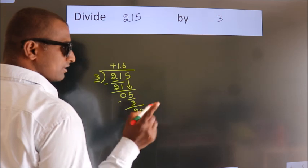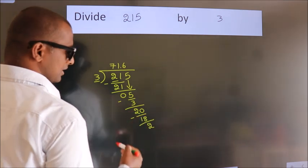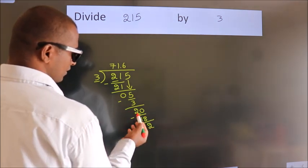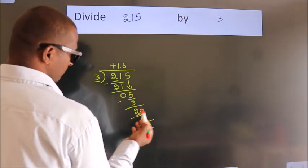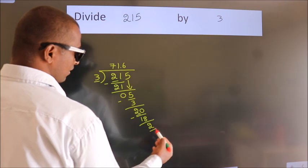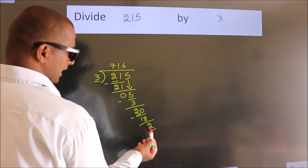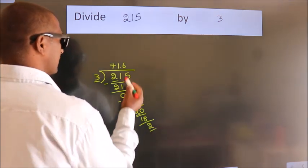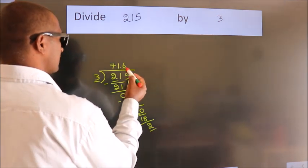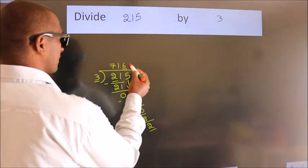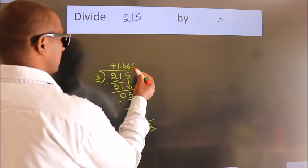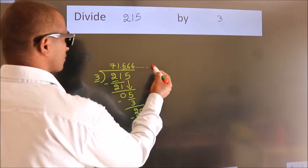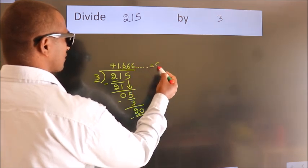Now observe — we had 2 here before, and we got 2 again. That means this number keeps on repeating. So this is our quotient.